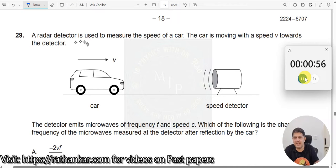Question number 29. A radar detector is used to measure the speed of a car. The car is moving with speed v towards the detector.